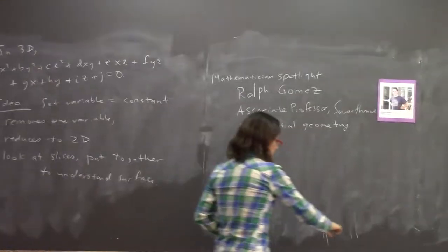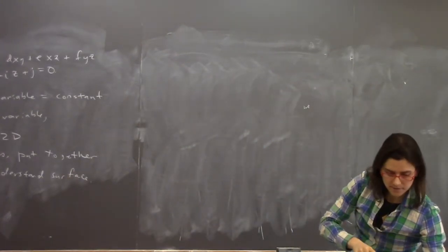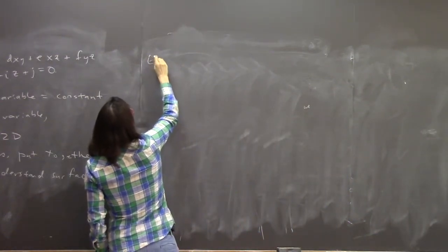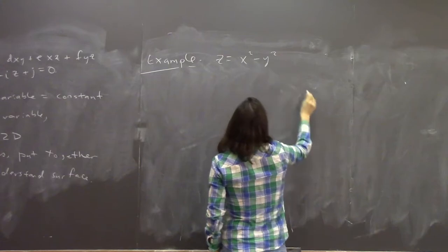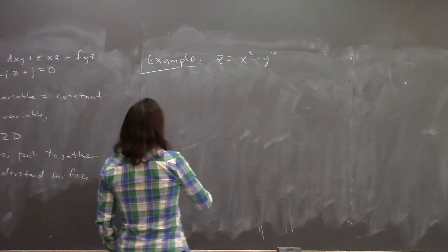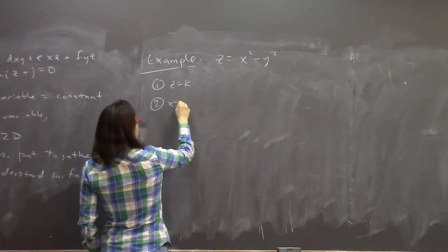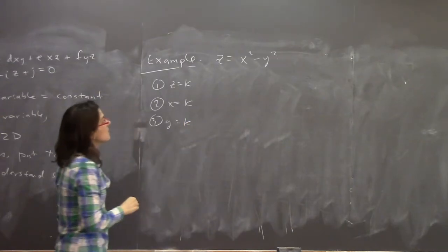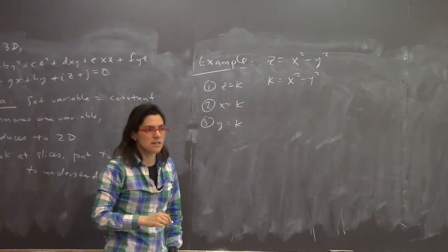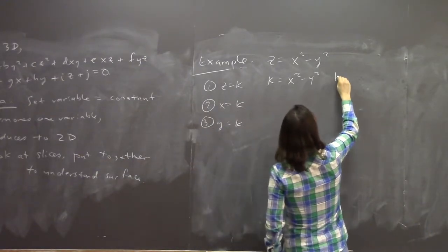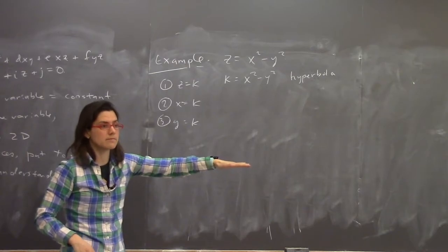The first one we'll look at is one we've seen before: z equals x squared minus y squared. We'll look at setting various things equal to a constant. If z equals a constant k, then we have k equals x squared minus y squared, which is a hyperbola. So if you slice it with any horizontal plane, you get a hyperbola — different hyperbolas, but hyperbolas.